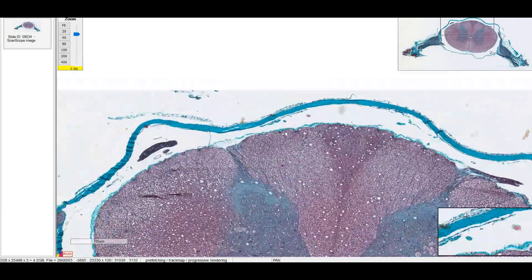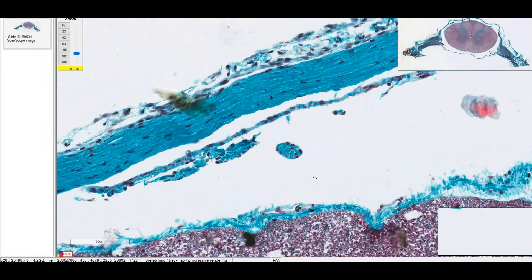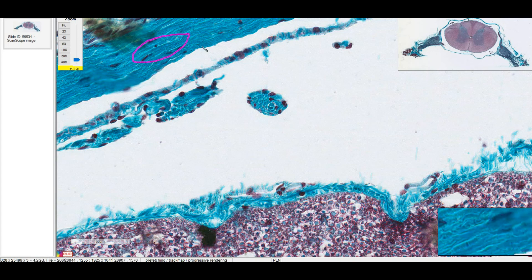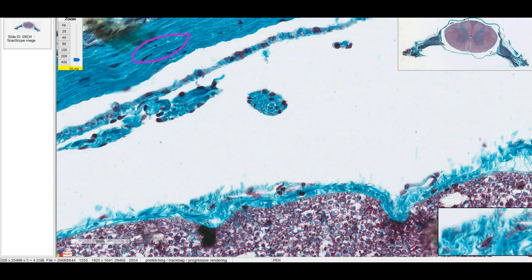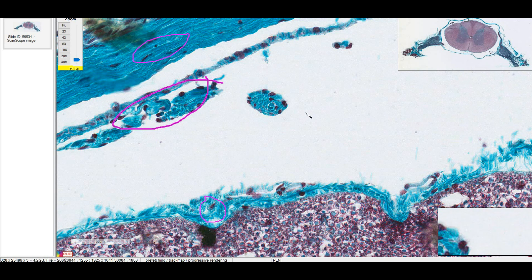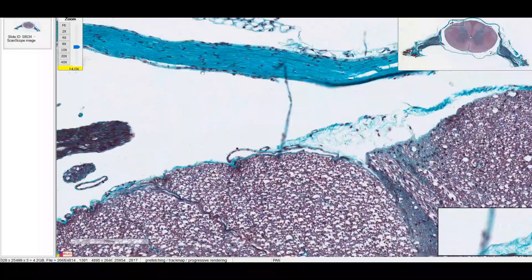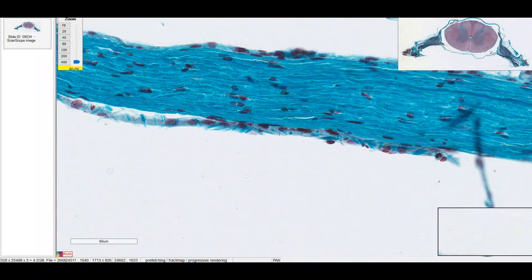Now let's zoom in and take a closer look at the meninges. On the outside, we have dura mater. It's this tightly packed material here. Immediately adhering to the spinal cord, we have pia mater. And this is the arachnoid mater in the arachnoid space. Sometimes there will be bits of arachnoid mater that are attached to the pia down here. It's a little hard to differentiate between pia and arachnoid down here.